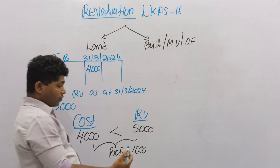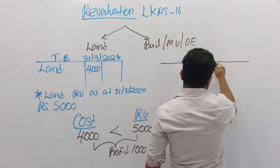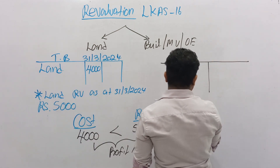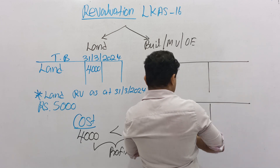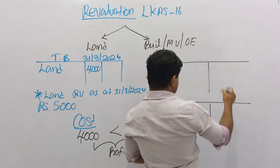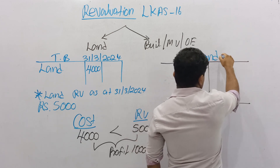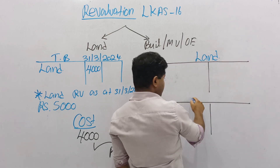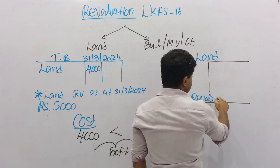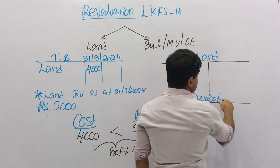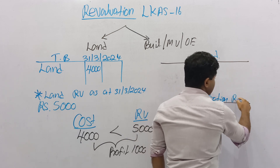Now think about how to record in the ledger accounts. If there is a revaluation profit and land increases as a result, it is recorded as a revaluation reserve using two separate ledger accounts: the property land account and the revaluation reserves account.